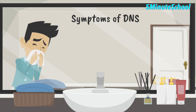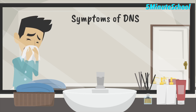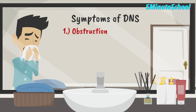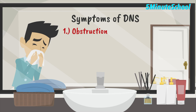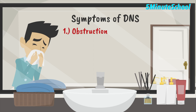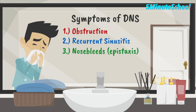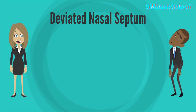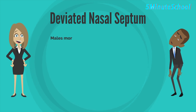Key symptoms of a deviated nasal septum include obstruction of at least one nostril causing a blocked nose. This may result in noisy and difficult breathing. There may also be recurrent sinusitis or nosebleeds, and patients may report facial pain. A deviated nasal septum can affect any age or gender, though males are more commonly affected than females.